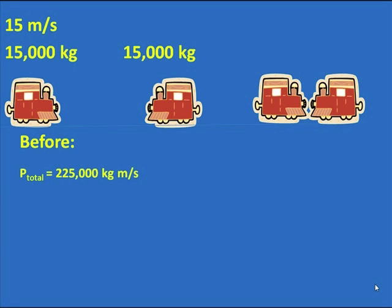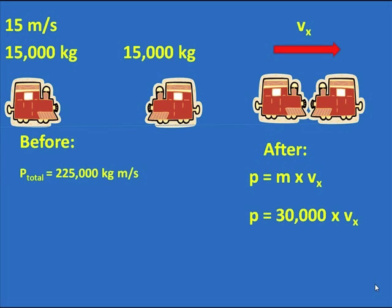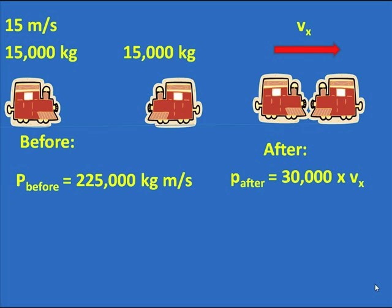Now we look at the after picture. It is moving to the right. They have joined together. And the total momentum then is equal to... This is after. The mass, totally, they've joined together. So it's 30,000 times the unknown velocity.